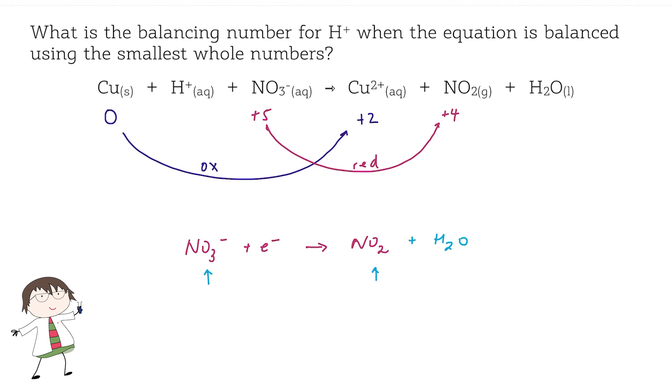My oxygens are now balanced, but now I've introduced hydrogen into this half equation. I can balance the hydrogens in the water by adding hydrogen ions to the left hand side, in this case two.